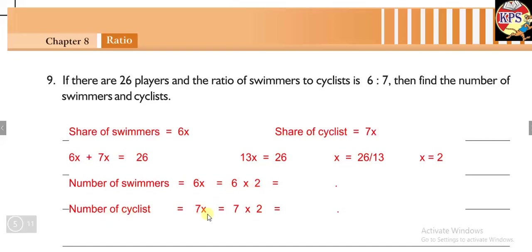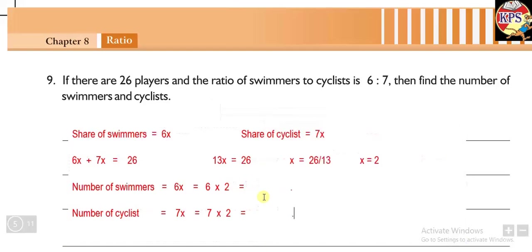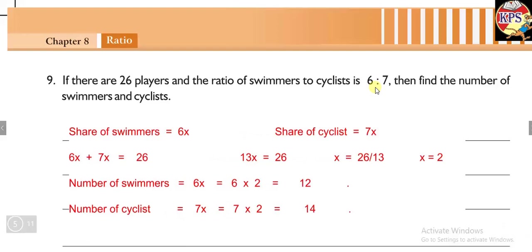Number of swimmers equals 6x equals 6 into 2, because x equals 2. Number of cyclists equals 7x equals 7 into 2. So we get the number of swimmers are 12 and number of cyclists are 14. Since the ratio is 6 ratio 7, we get answers 12 and 14. All questions use the same method, so try to solve questions number 10, 11, and 12 on your own.